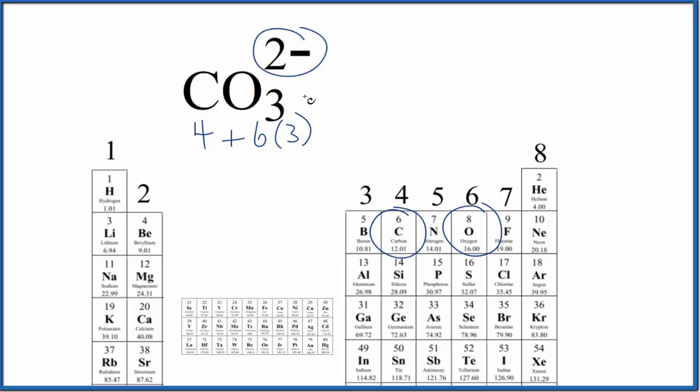This negative 2 means we have 2 extra negative charges, so 2 more electrons. Let's add 2 more valence electrons there. Add this up, we get a total of 24 valence electrons for the CO3 2- Lewis structure.